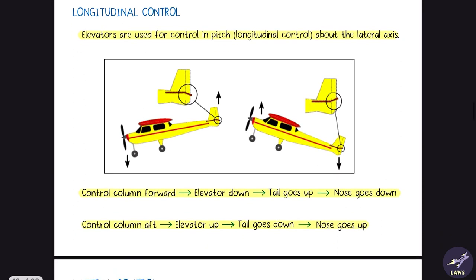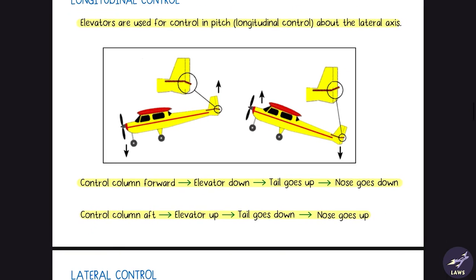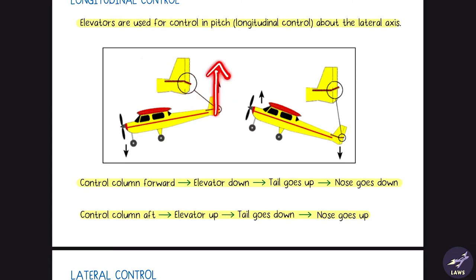Longitudinal control — elevators are used for control in pitch, along the longitudinal axis and about the lateral axis. When the control column is moved forward, the elevator goes down, airflow accelerates over the top surface creating low pressure above and high pressure below, producing an upward force. As a result, the tail goes up and the nose goes down.